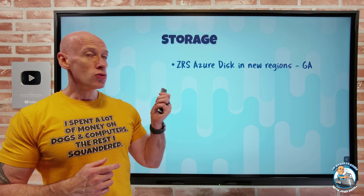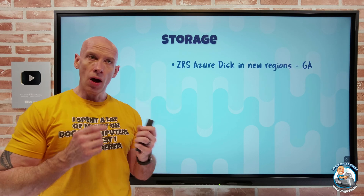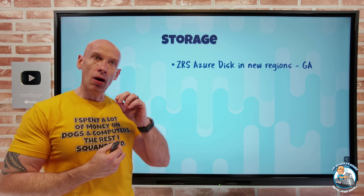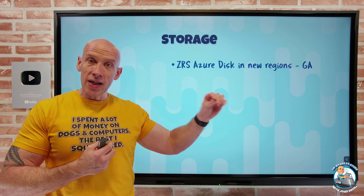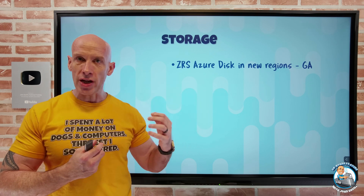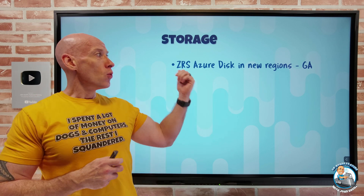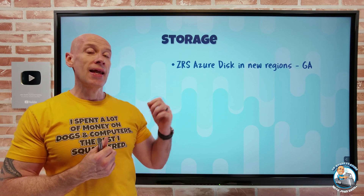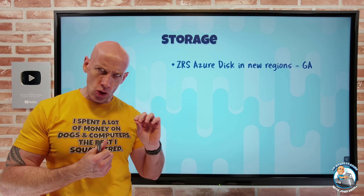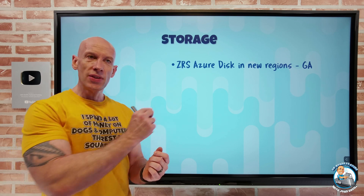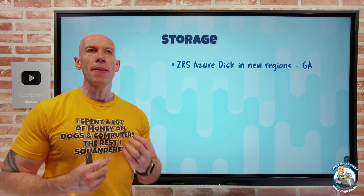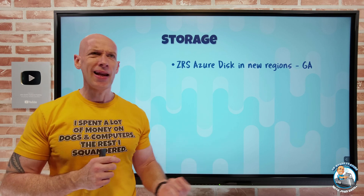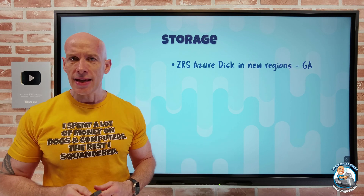On the storage side, zone redundant storage — i.e. there are always at least three copies of our data, distributed over the three availability zones in a region that has availability zones — now for Azure disks, which includes premium SSD and standard SSD, I can now have that ZRS option in new regions, specifically Norway East and UAE North. The whole point of zone redundant storage is you get better resiliency from data center level impacts like a substation power failure, cooling, networking, et cetera.